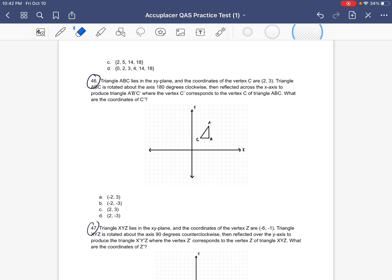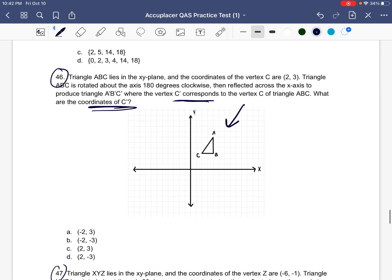That was a mouthful, but all they're saying is this triangle here that we're looking at is going to be rotated about the axis and then reflected. Where will that triangle land and what will be the coordinate of C or the angle C once it's rotated and reflected? How do we do that? Now, before we go ahead and do the rotation and reflection,